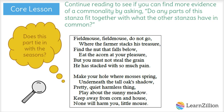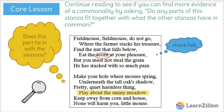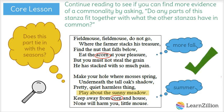Let's move on to the third and fourth stanzas to see if there is any more evidence of a link to the seasons. Stanza three doesn't seem to talk about the seasons quite as much — this stanza is more about the farmer, but it does mention acorns, so maybe this stanza also takes place in the fall. In the fourth stanza, it says, "Play about the sunny meadow." I bet the author is talking about summer if the weather is so nice. It also says "keep away from corn," and I know that corn grows in the summer, so I can add this as more evidence that the stanzas all refer to the seasons.